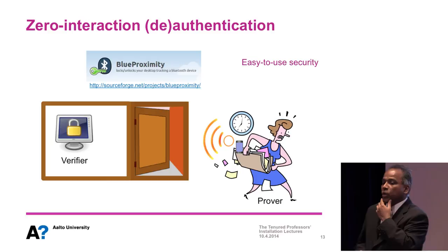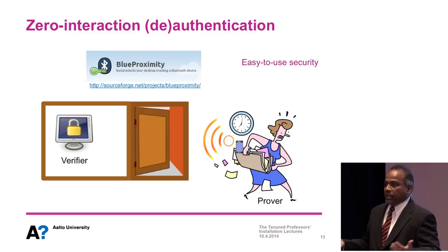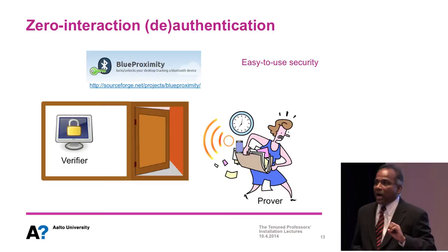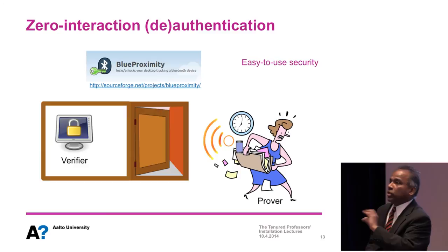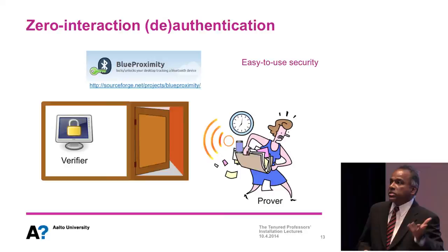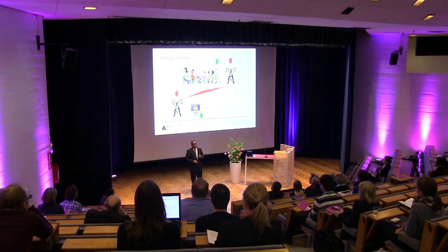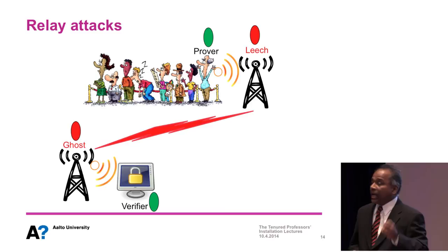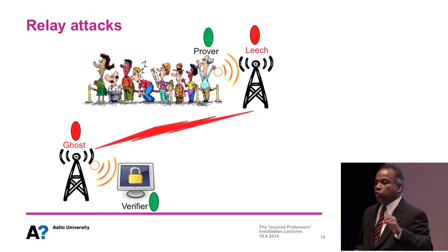Another example is an open source project called Blue Proximity, which you can install on your computer. You pair your computer with your mobile device, and thereafter whenever your mobile device is nearby, your computer will unlock without typing a password. By the same token, if you walk out the door, your computer detects your phone is not nearby and locks itself automatically. This is an easy-to-use security mechanism.